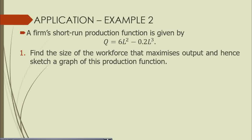To find the workforce that maximizes output, we need to work with the first order condition as well as the second order condition. Let's begin by getting the first order derivative of the production function. We drop the power and multiply: the 2 multiplies the 6 to become 12, and the 3 multiplies 0.2 to make 0.6. We subtract one from each power, giving us q' = 12L - 0.6L².